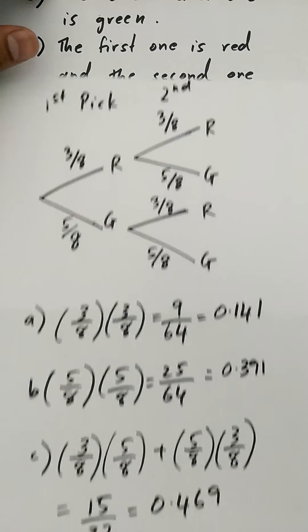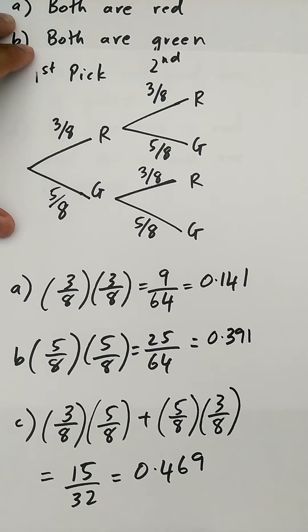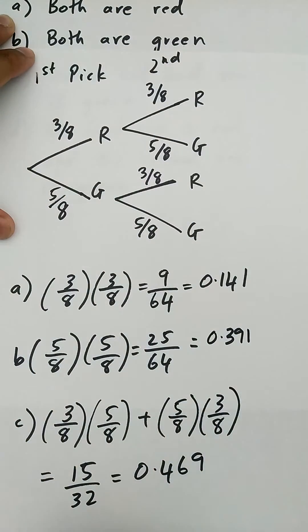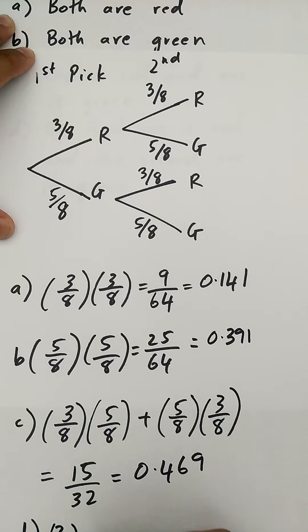And then part d says the first one is red and the second one is green. If I'm doing that, it's red green, just 3 over 8 times 5 over 8, it's 15 over 64, just 0.234.